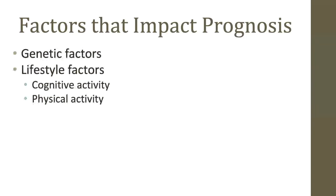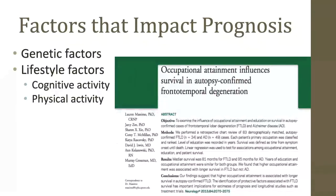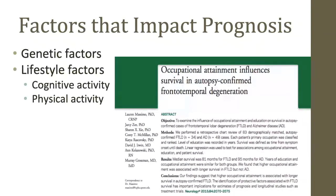There's a broad range for life expectancy, and research has demonstrated there are certain factors that may contribute to a more rapid or more prolonged course. These include genetic factors. Work out of our center by Dr. McMillan shows that genetic variations can explain some of the variability we see in survival time in FTD. We also know that lifestyle factors like cognitive activity acquired over your lifetime through education or your job may be protective. This type of cognitive stimulation may help an individual develop cognitive strategies and neural connections in the brain that can be especially helpful for compensation early in the disease.